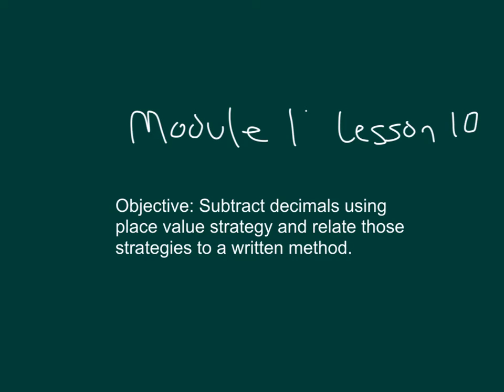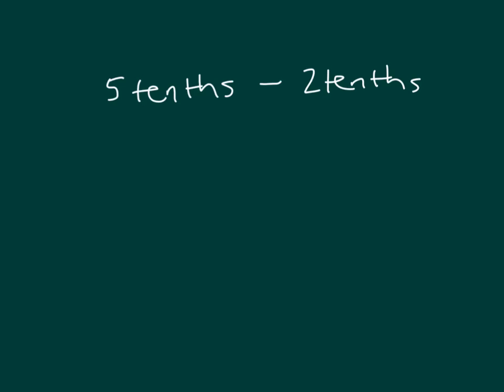The objective within this lesson is to subtract decimals using place value strategy and relate those strategies to a written method. How do I go about subtracting 5 tenths minus 2 tenths?